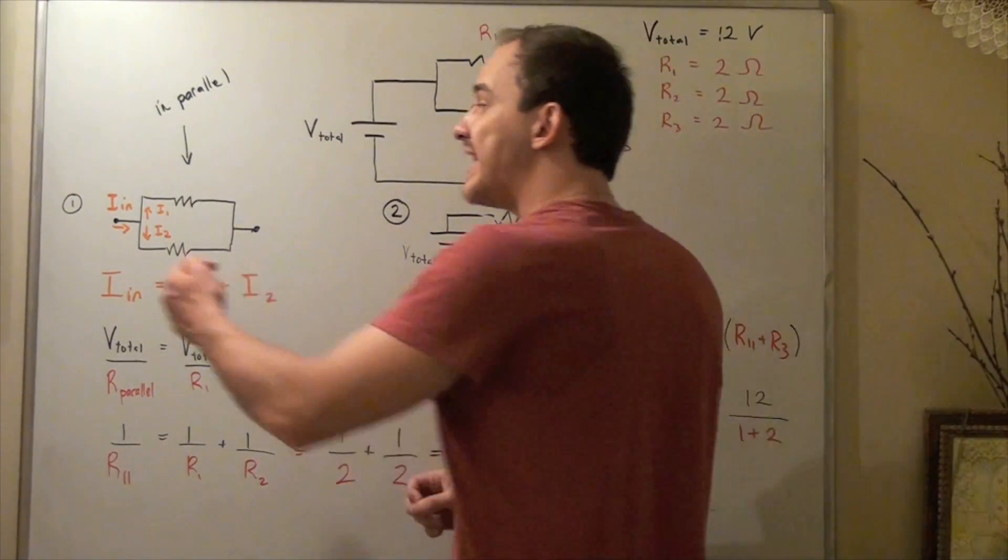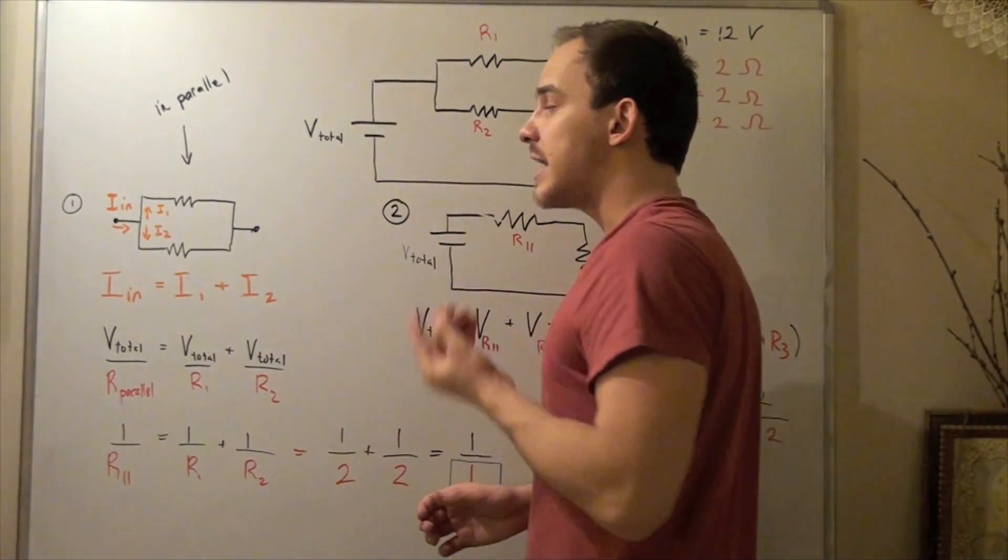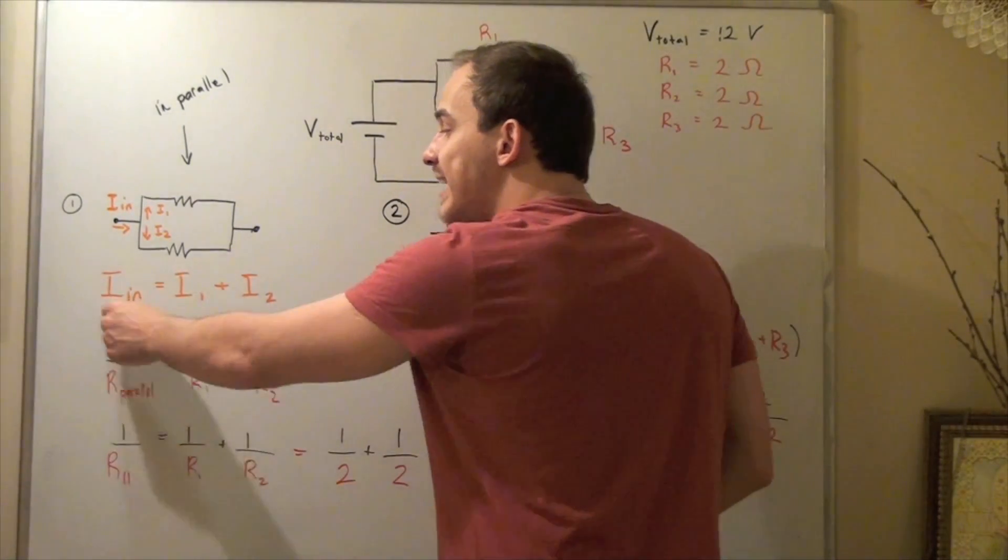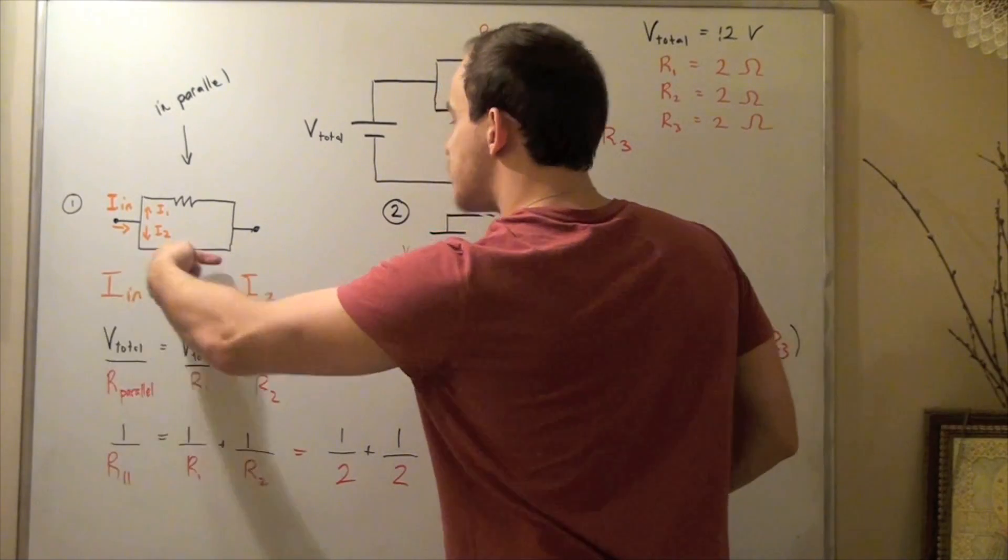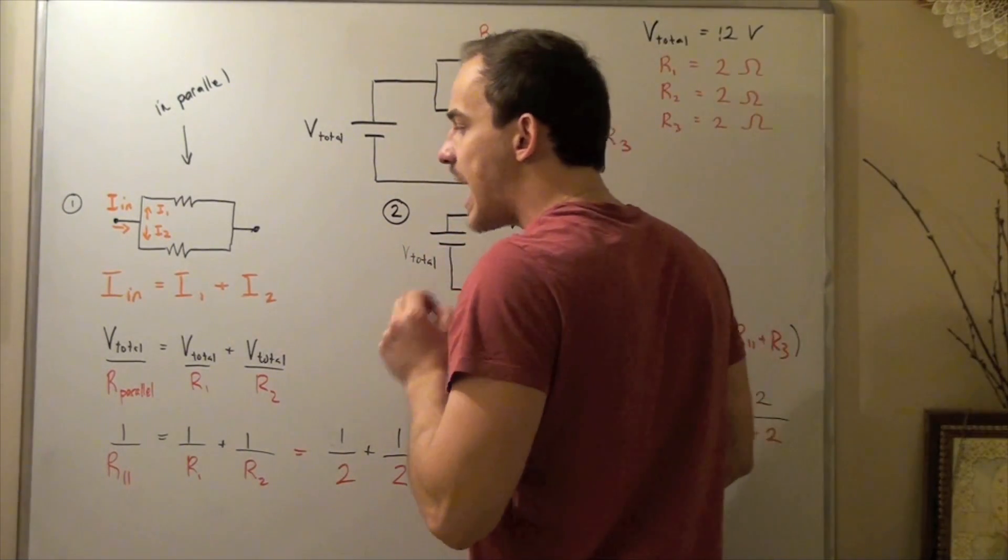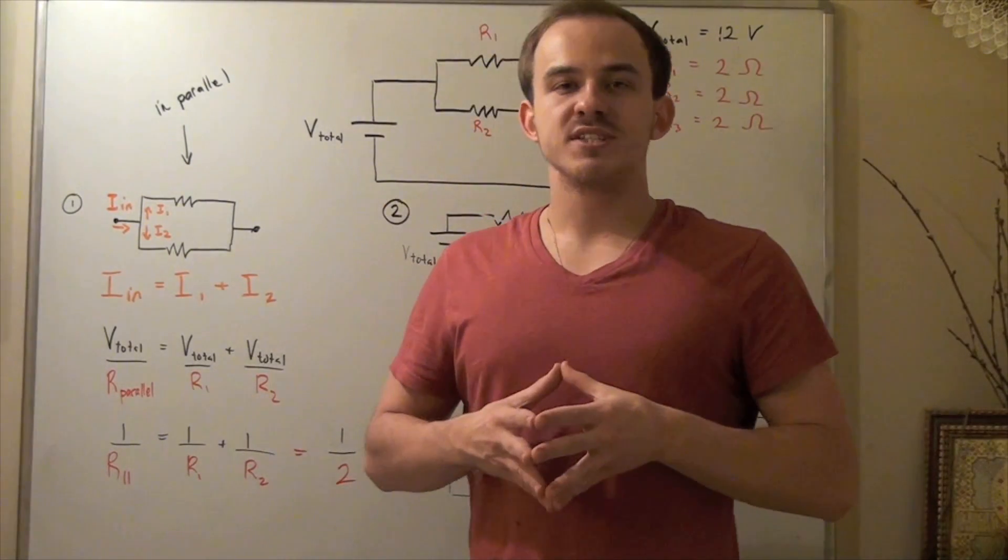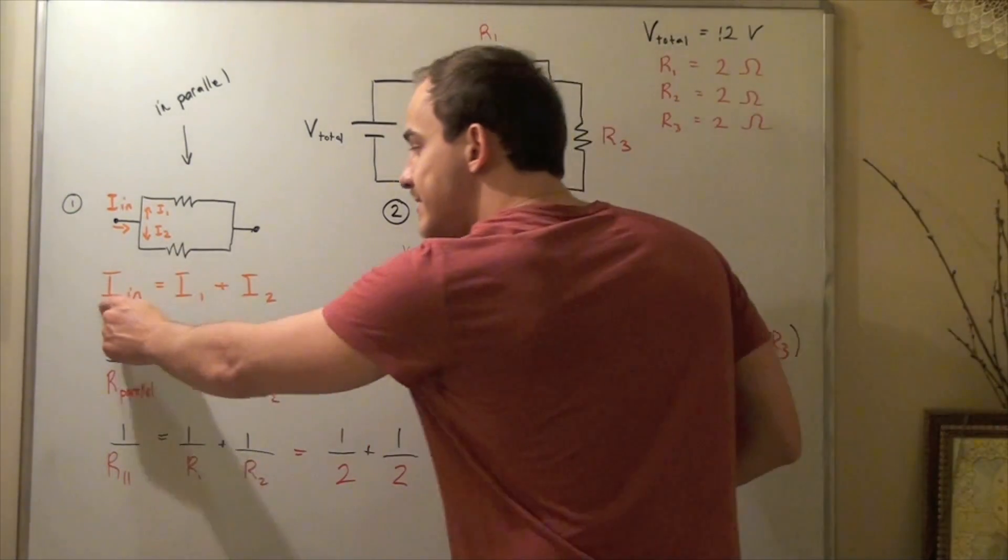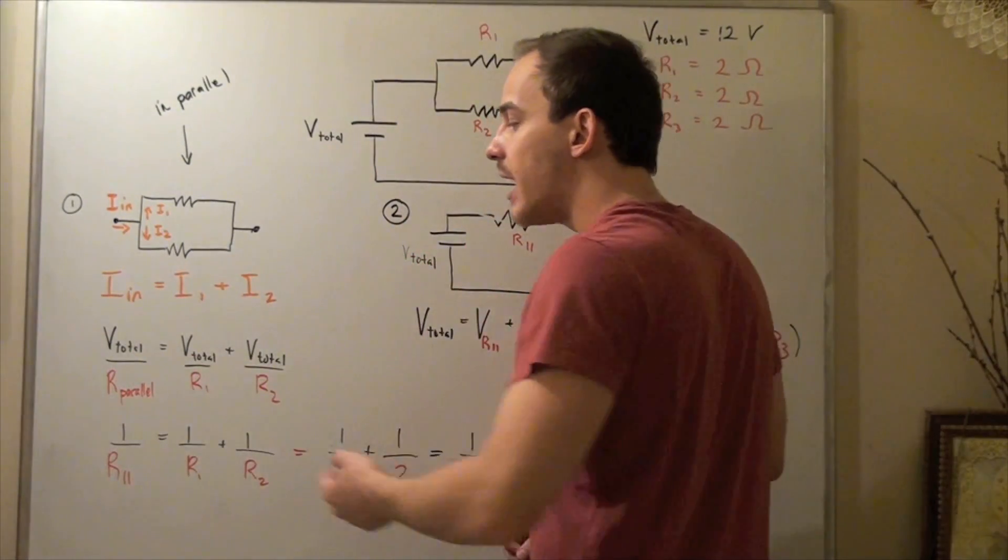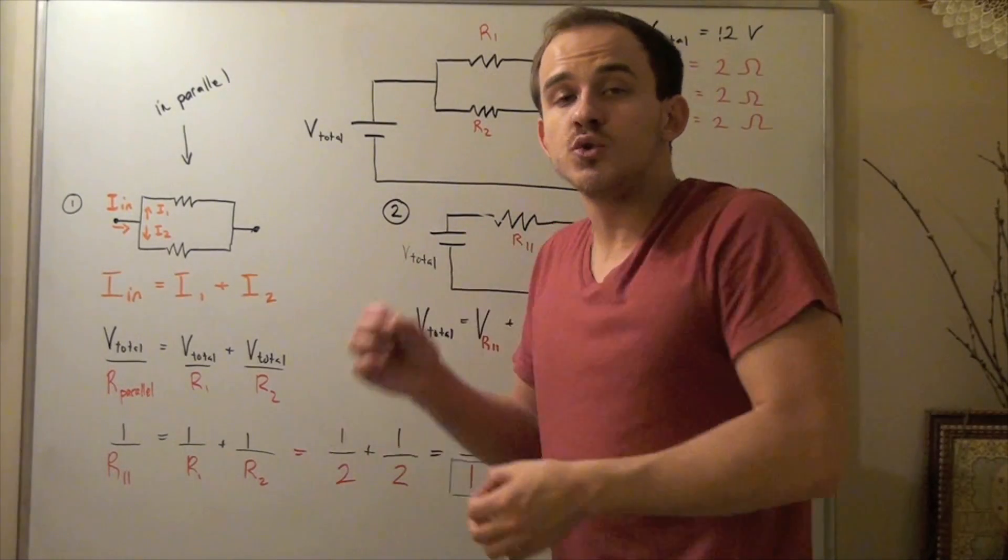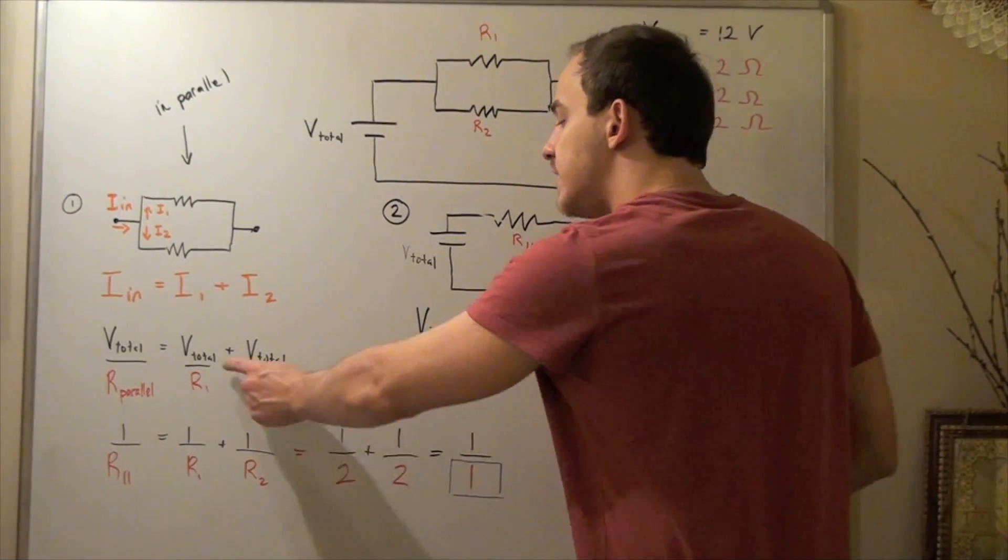That simply means the current that enters this intersection must equal the current that leaves or splits in this intersection. So current coming in equals I1, the current going up, plus I2, the current that goes down through the bottom R2 resistor. Now we use Ohm's law, which states that current equals voltage divided by resistance.